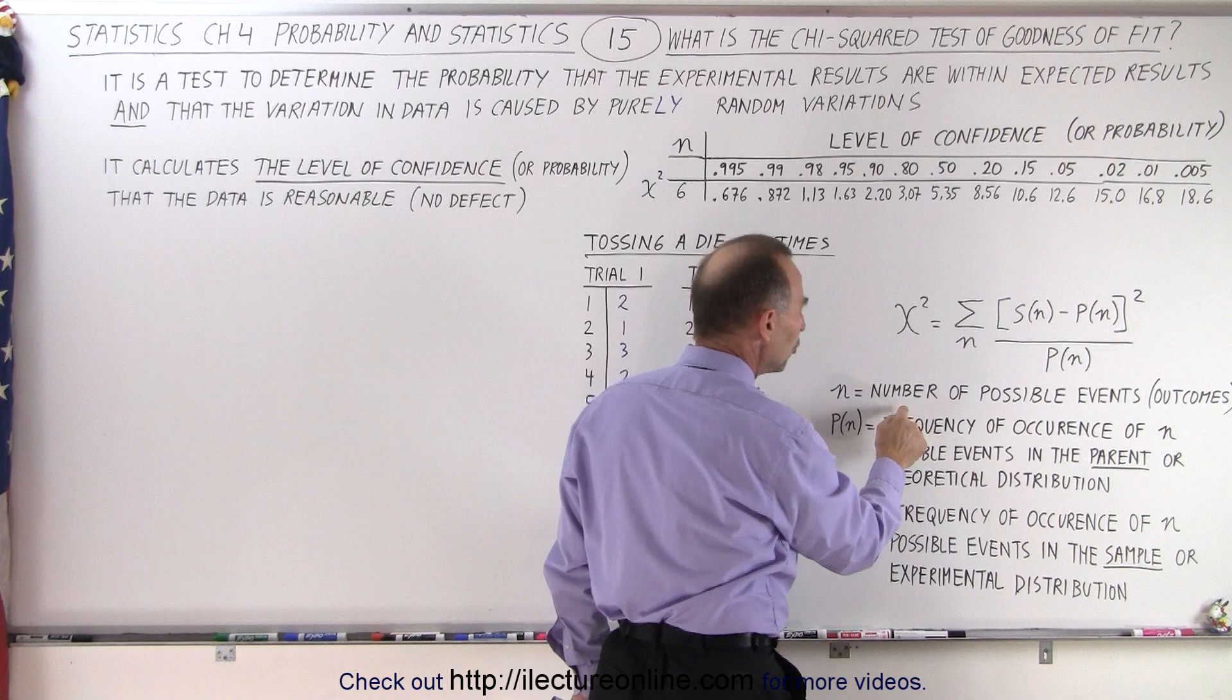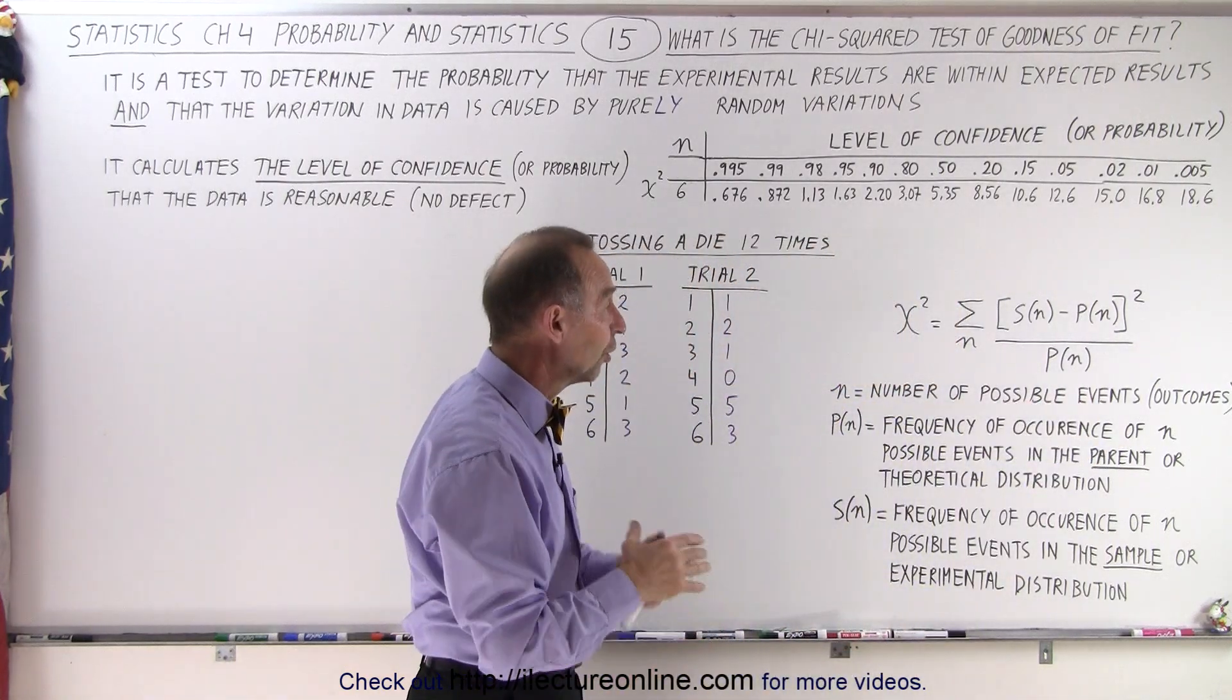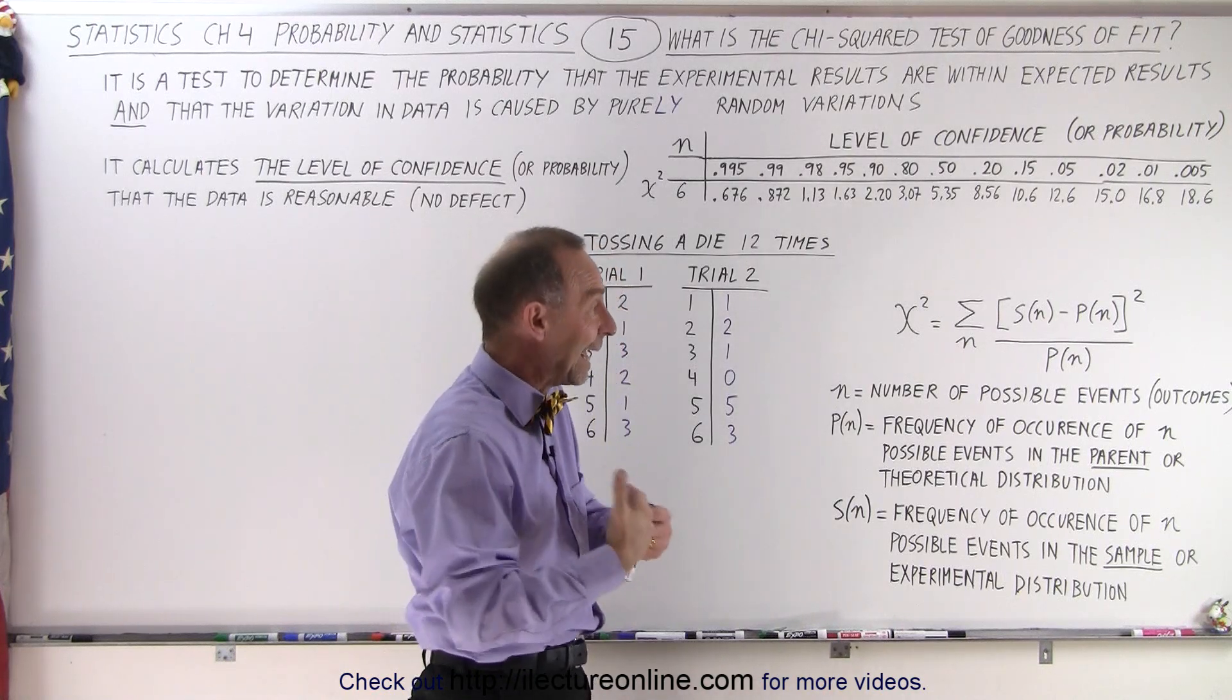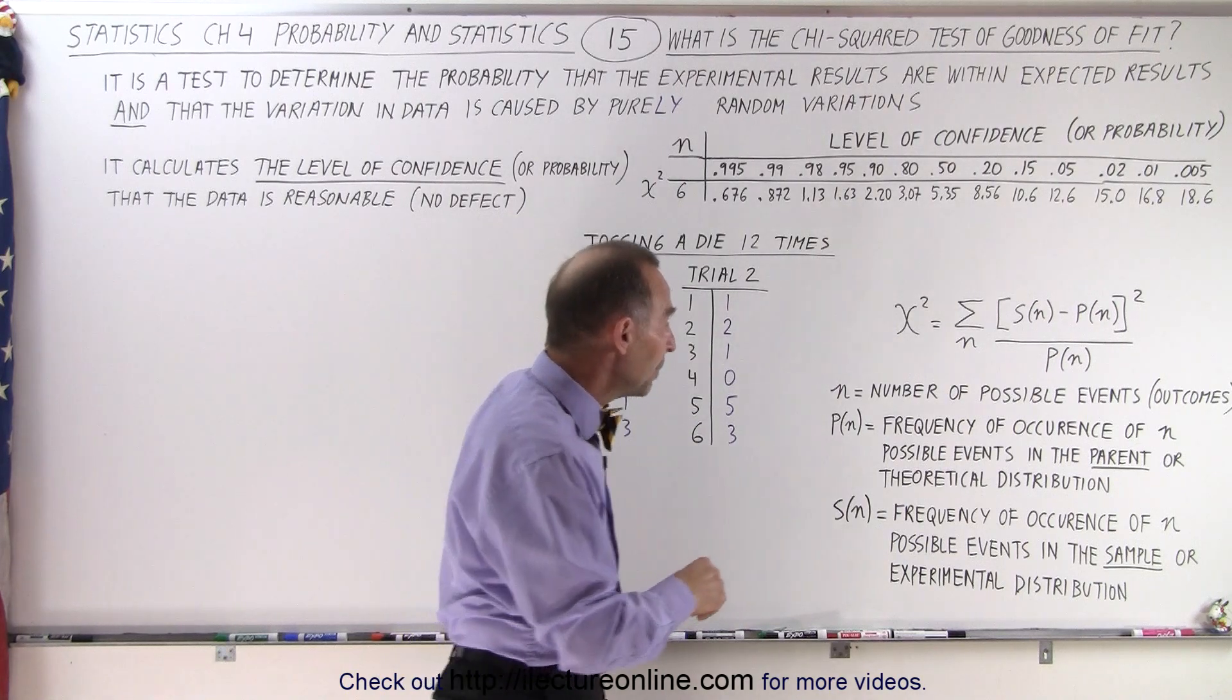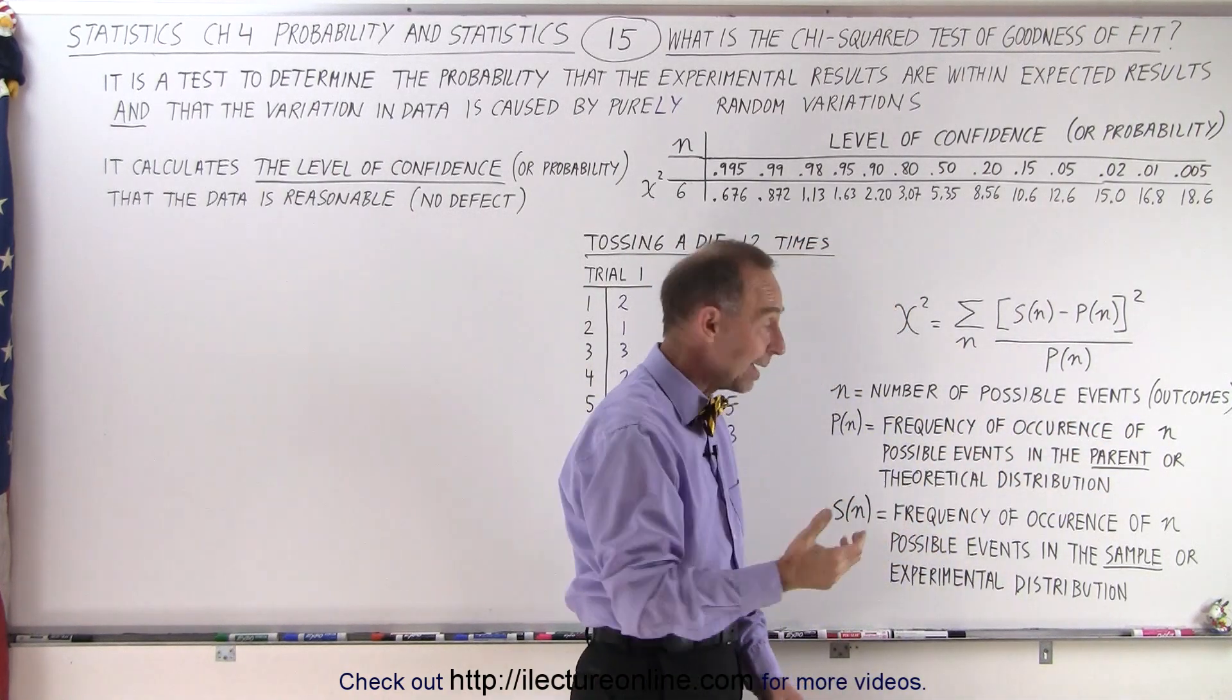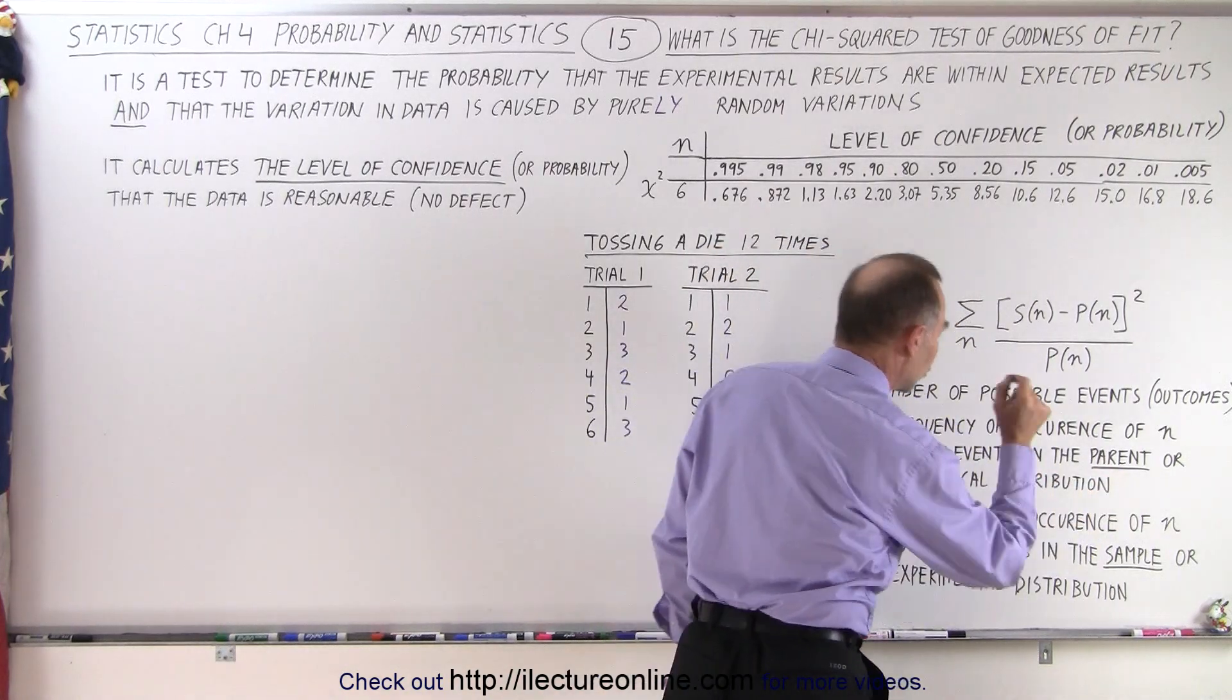Well, N represents the number of possible events, the number of possible outcomes. So if we're dealing with tossing a single die, then N would be 6. If we're tossing two dice, then N would be 11, because there's 11 possible outcomes.